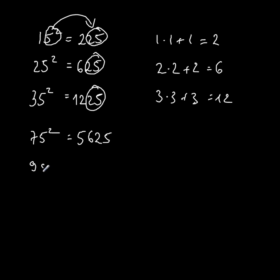Let's do 95 square. That would be 9 times 9 equals 81 plus 9. That would be 90. So and then we have 9025.